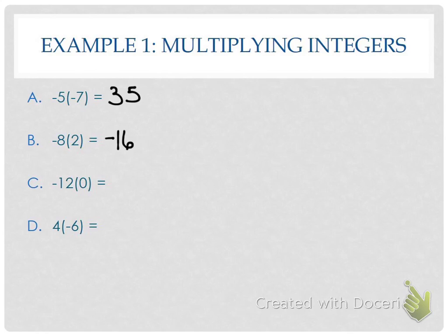Negative 12 times 0. Then 4 times negative 6 — is it 24 or negative 24? Negative 24, because I have one negative. Most of the questions are either going to have one or two negatives. There will be questions that have more than that, and that's why the even-odd rule is the one I teach, because it applies no matter how many numbers are being multiplied. The even-odd rule is what we go by.